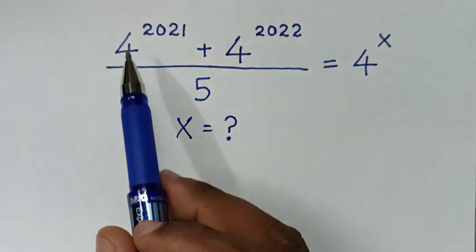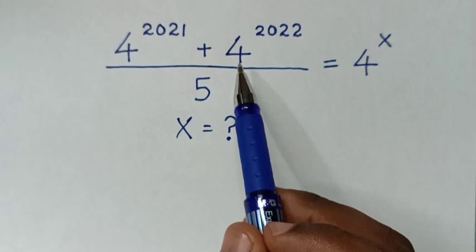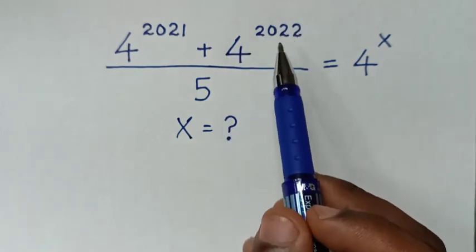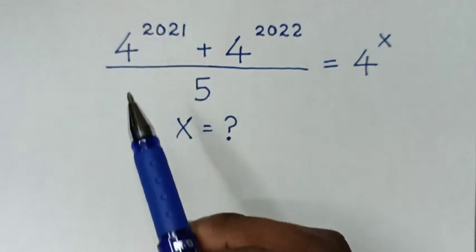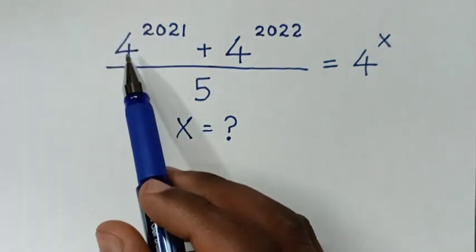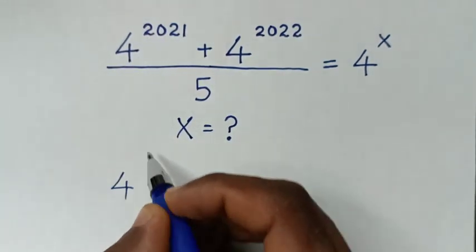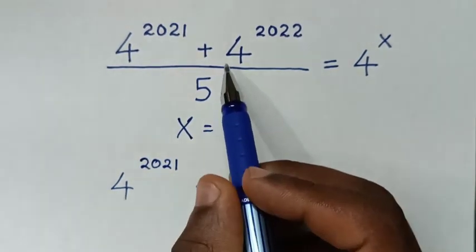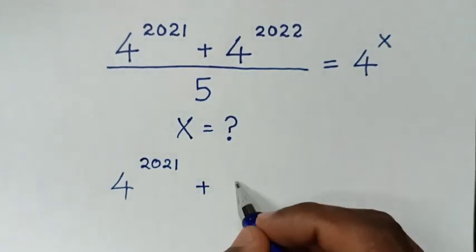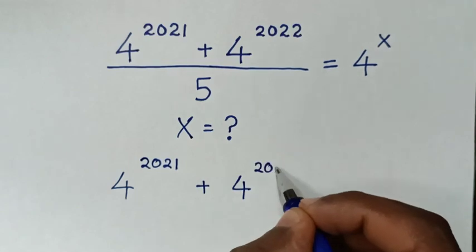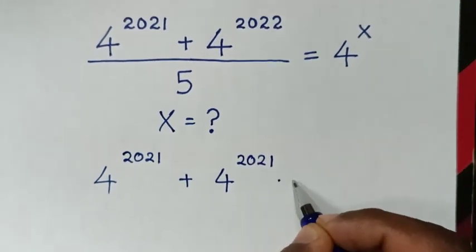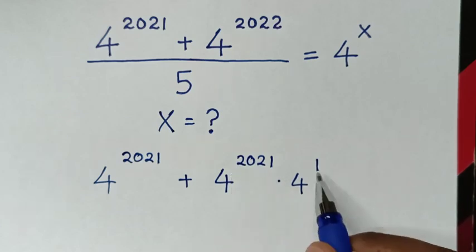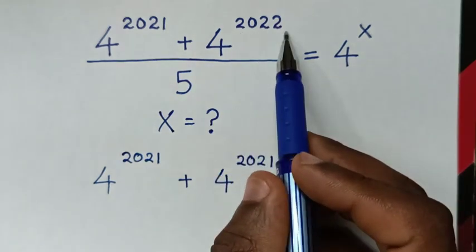Now from here, 4 power of 20,21 is smaller than 4 power of 20,22. So from 4 power of 20,22 we make 4 power of 20,21 common. So this will be 4 power of 20,21 plus 4 power of 20,22, which is the same as 4 power of 20,21 times 4 power of 1, because power of 20,21 plus 1 is power of 20,22.